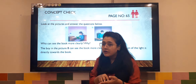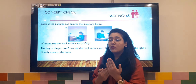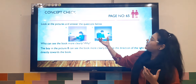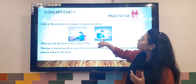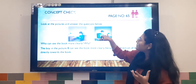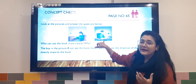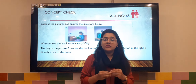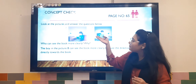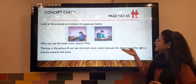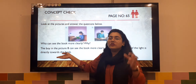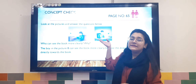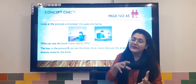As you can see, here is a girl and a boy. The girl is holding a book but the light is positioned such that it does not fall on her book — the part she needs to read is in the shadow, in the dark area. But comparing with the boy's picture, his book is completely bright in the light. The lamp is completely lighting the book, so everything is very clear. Therefore the boy in picture B can see the book more clearly because the direction of the light is directly on the book.